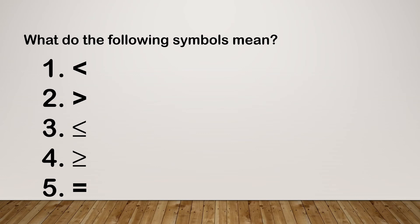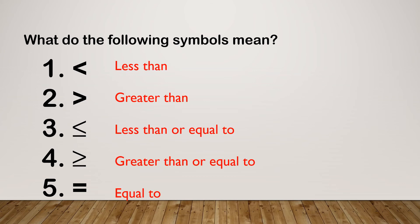There are five symbols altogether that we use. The two we've just looked at, two that are slightly different, and our equal symbol at the bottom. Pause and have a think and see if you know what these mean. We've got our less than, our greater than, our less than or equal to, greater than or equal to, or our equal to. If you have trouble with numbers 3 and 4, just think of the symbol it represents and the fact that it's like that symbol and the equal sign pushed together — so it's less than or equal to.